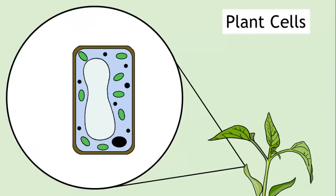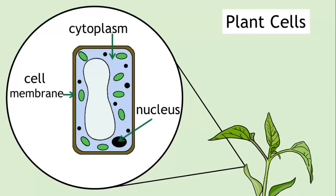Plant cells. Plant cells contain the structures that animal cells contain, that we've just discussed—the nucleus, the cytoplasm, and the cell membrane—but they also include lots of extra structures.